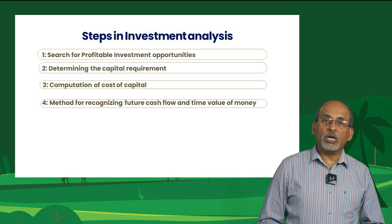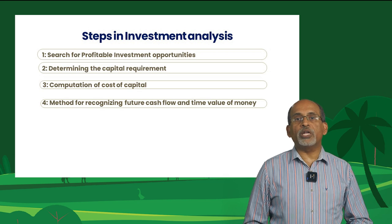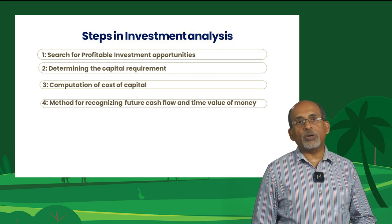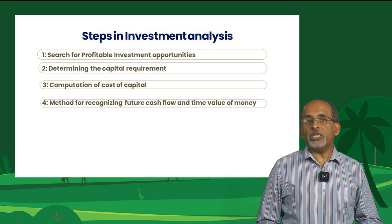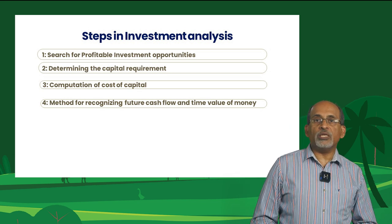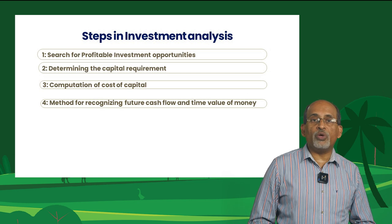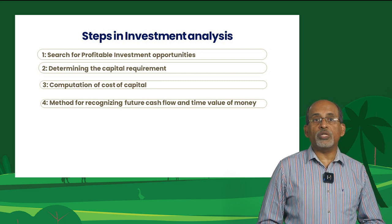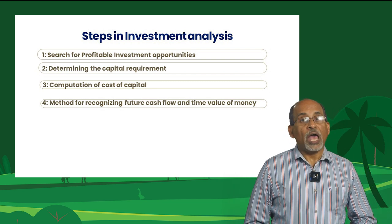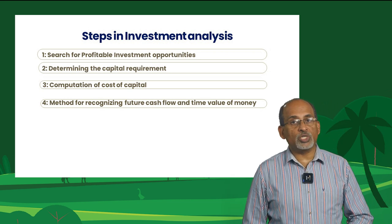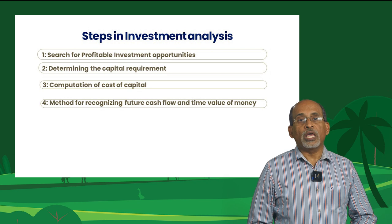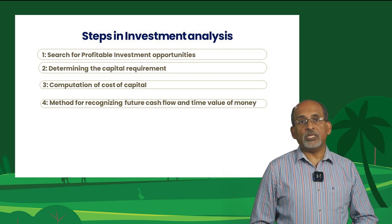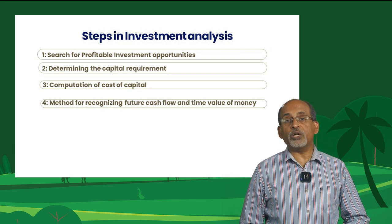Usually, for convenience, the interest rate offered by credit institutions is taken as the discount rate, and it is usually taken as 10–12% per annum. Then we need to find out the method for recognizing the future cash flows and the time value of money. While estimating the profit or net income, time is not brought into consideration if the expenses and returns are in the same production cycle, which is within a year. Capital investments in agriculture are made in different periods, meaning the costs and returns are spread over time.